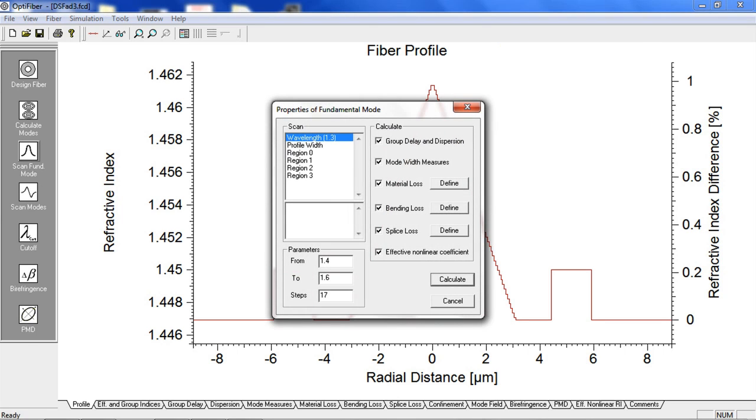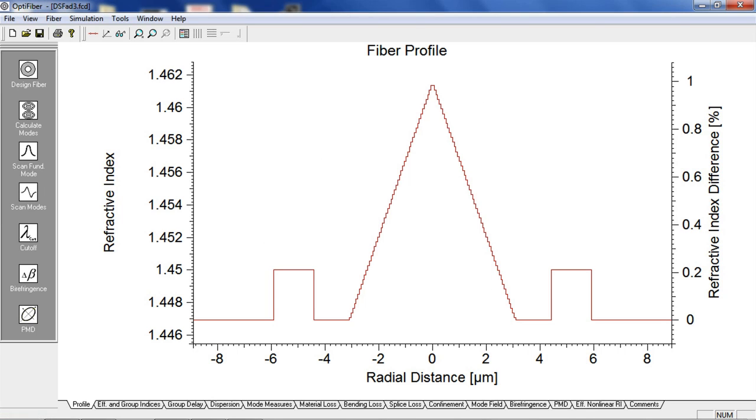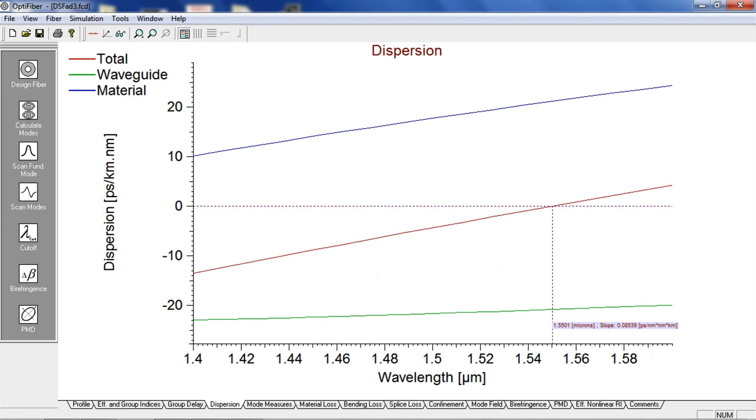If we select the Scan Fundamental Mode button and calculate the dispersion again, we can see on the graph that at 1.55 microns, the fiber is now at zero dispersion.